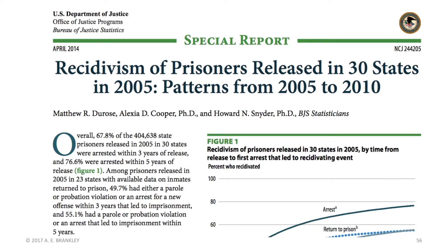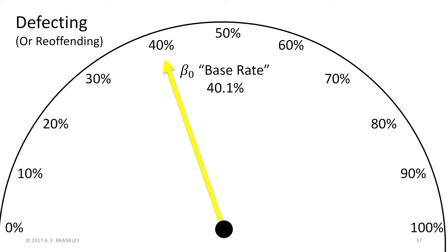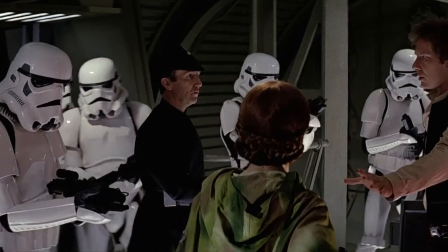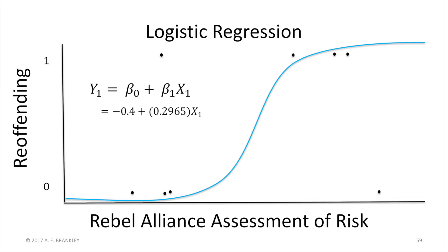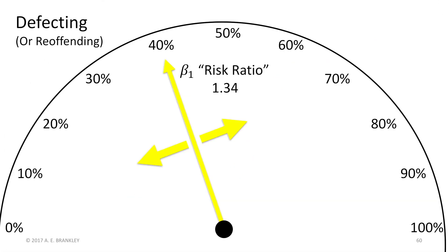For the purpose of this demonstration, I took the rate of new criminal offences observed in a large sample of individuals from the US. This is the same report cited in the white paper on the standardized risk levels, and it is available to you below in the description of this video. Now 40.1% is almost half of the sample, and the rebels did not have it easy. The B1 is equal to 0.2965, which is a log odds ratio. Once you transform it out of the log metric, this is equal to an odds ratio of 1.34. This means that for every one point of change in the scale, there is a 34% change in risk for defecting.